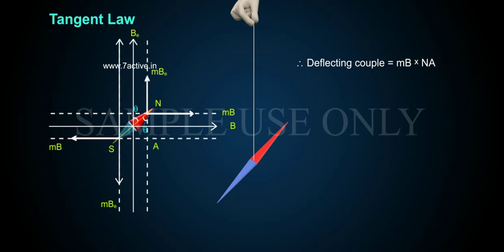Therefore, deflecting couple equals MB into NA.